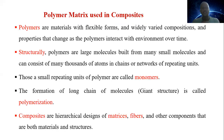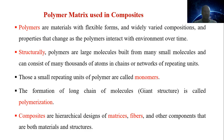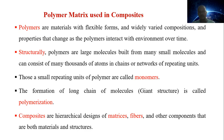Polymer matrix used in composites — polymers are materials which are a class of materials with flexible form and widely varied compositions, and the properties that change as the polymer interacts with the environment over time. Structurally, polymers are large molecules built from many small molecules and can consist of many thousands of atoms in a chain or network of repeating units. In chemistry, these repeating units are called monomers.